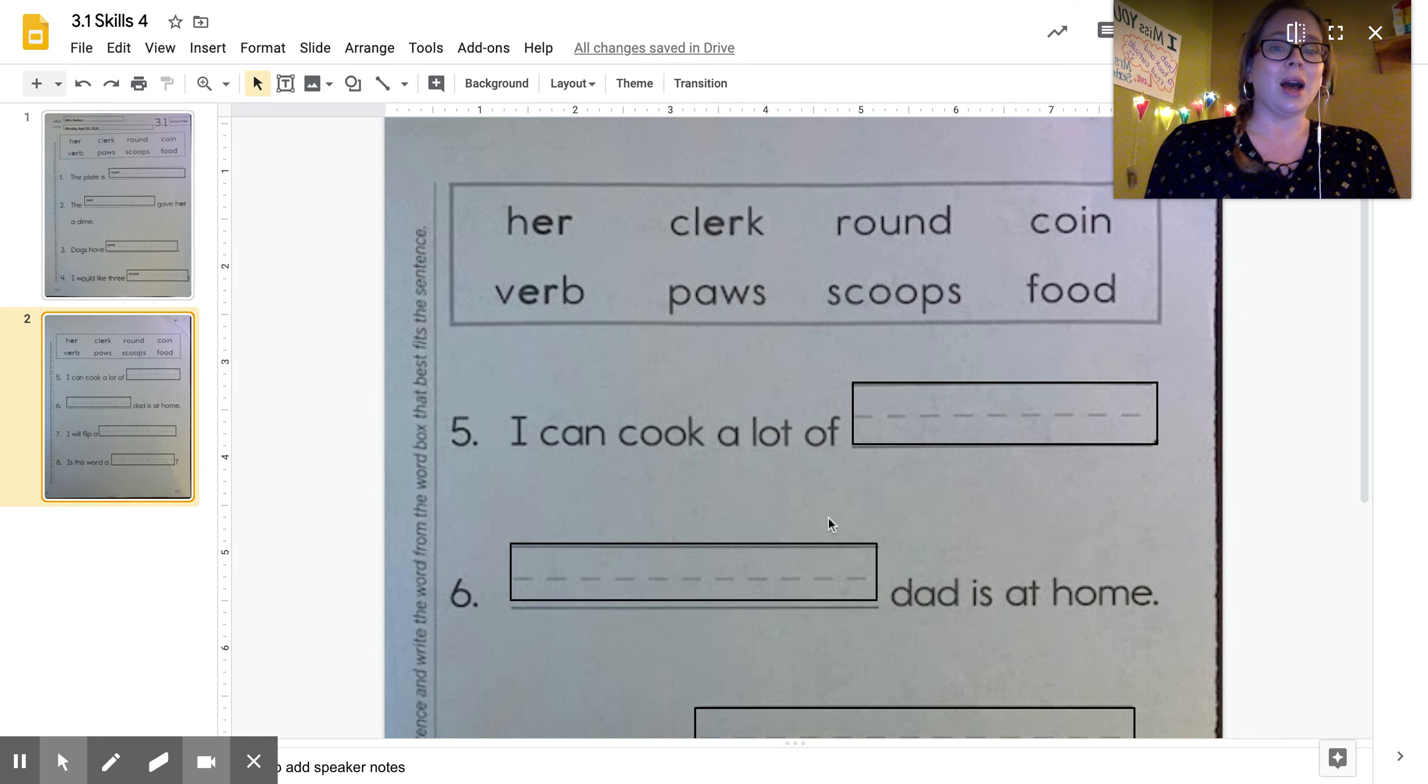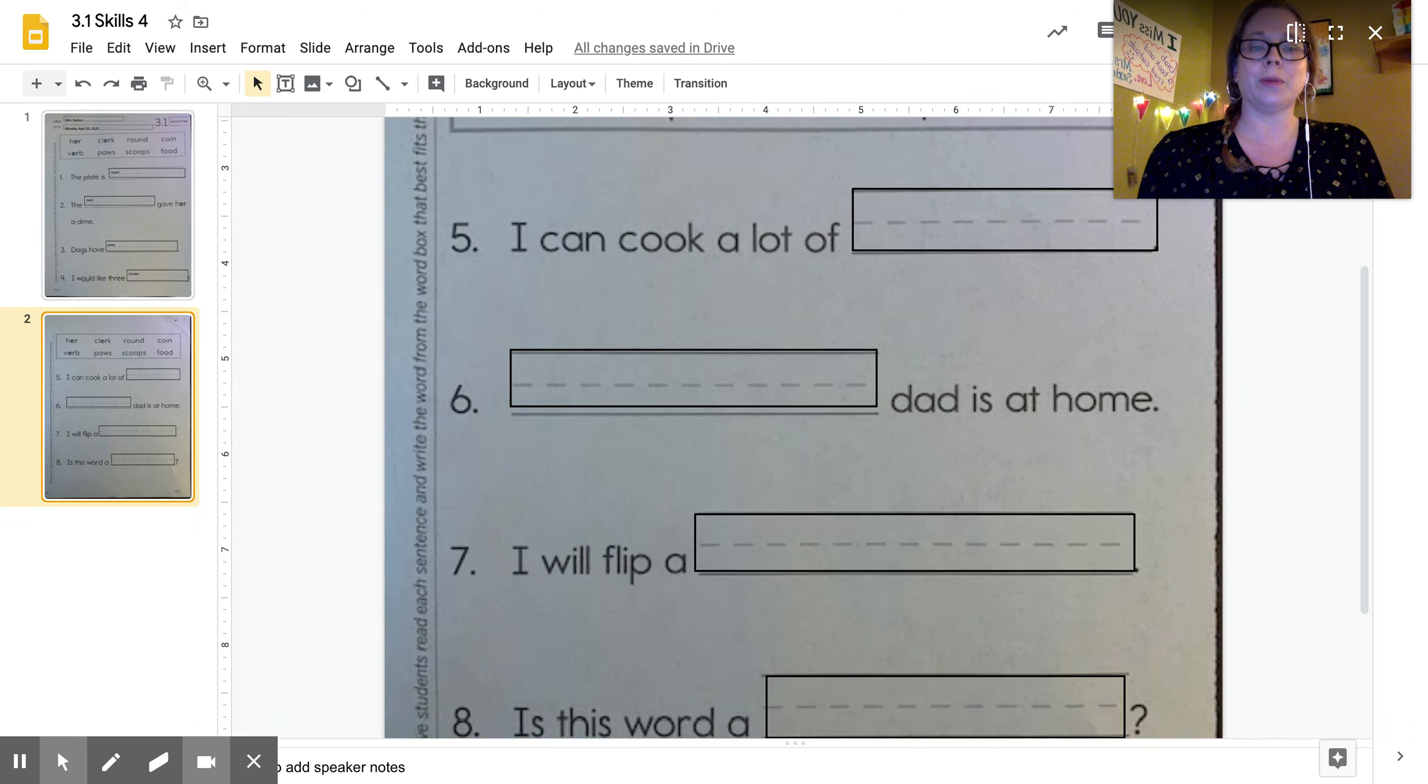I'm going to read these sentences for you and then you are going to be able to do the rest of it on your own. I can cook a lot of, pick the word that works best. Blank dad is at home. Blank dad is at home. Now remember this word is going to start a sentence so you will have to change one of these letters from a lowercase letter to a capital letter.